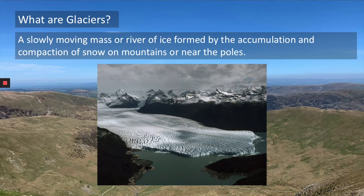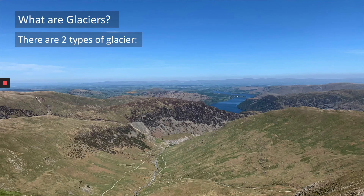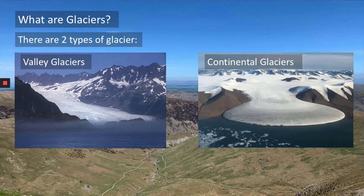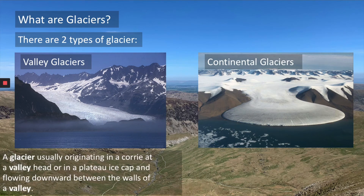Now since glaciers form at poles and in the mountains, there must be two different types of glacier. Our two different types of glacier are valley glaciers and continental glaciers. The valley glaciers are the glaciers that form up in the mountains. Our continental glaciers are ones that form at the north and south pole. A valley glacier is a glacier usually originated in a corrie at the valley head or at a plateau ice cap and flowing downwards between the walls of a valley. So in the Lake District it would have formed high up in the mountains and then it would have flowed down the valley, meaning the glaciers in the Lake District would have been valley glaciers.